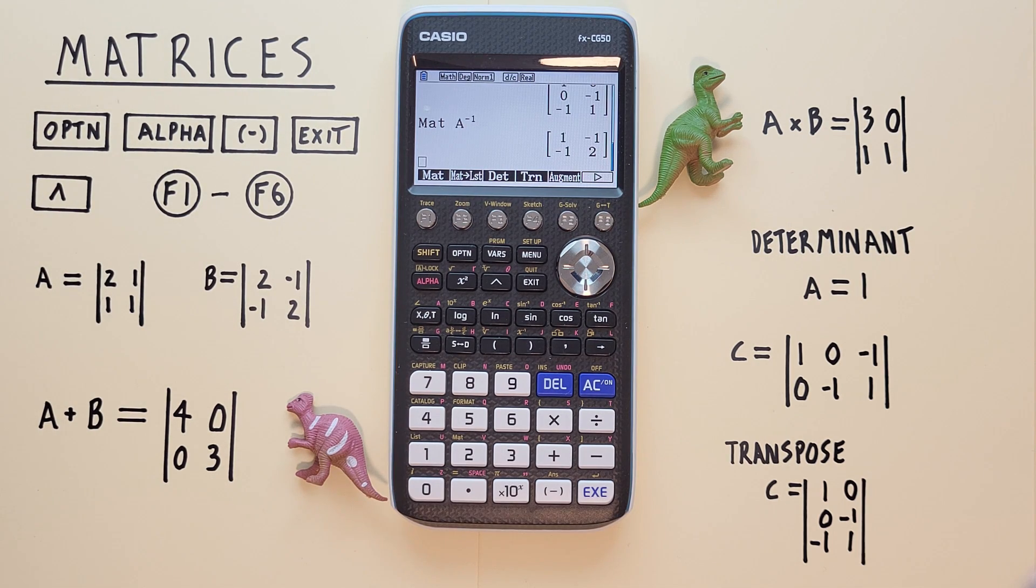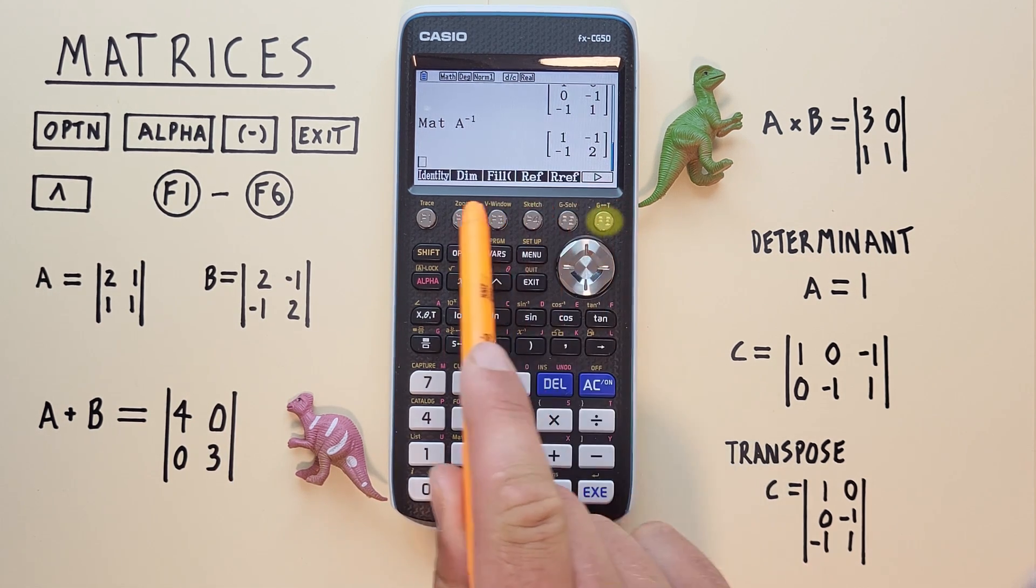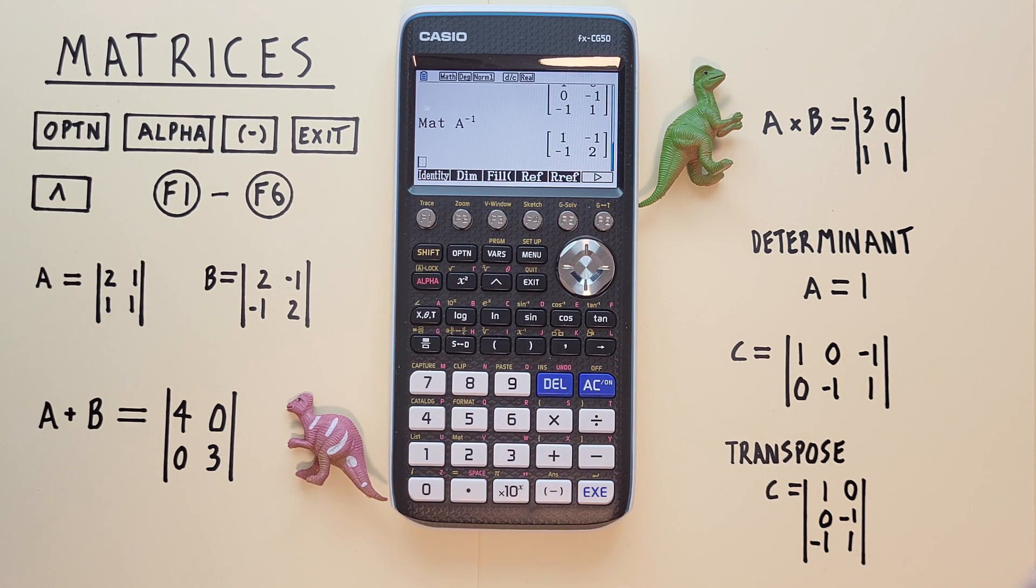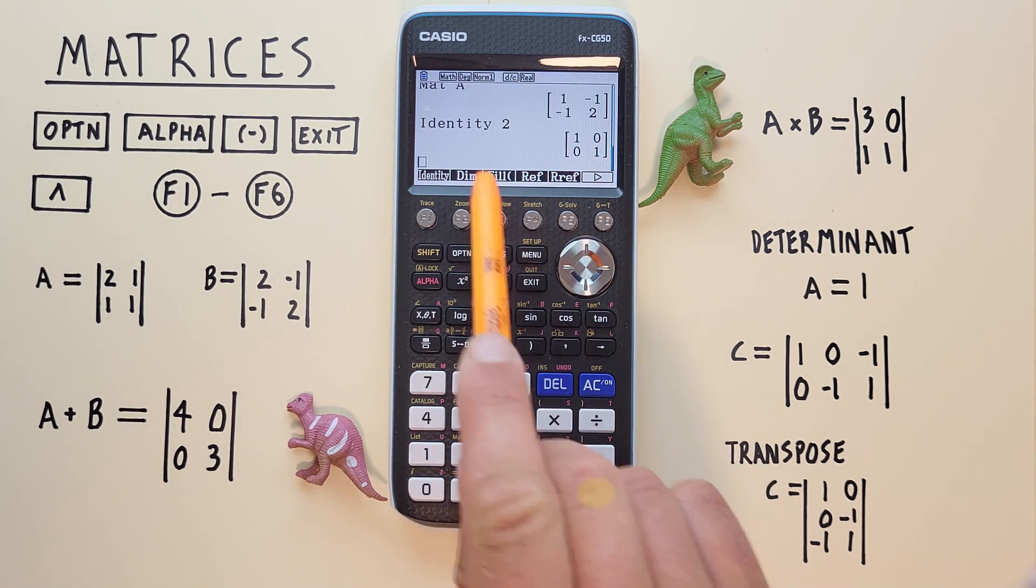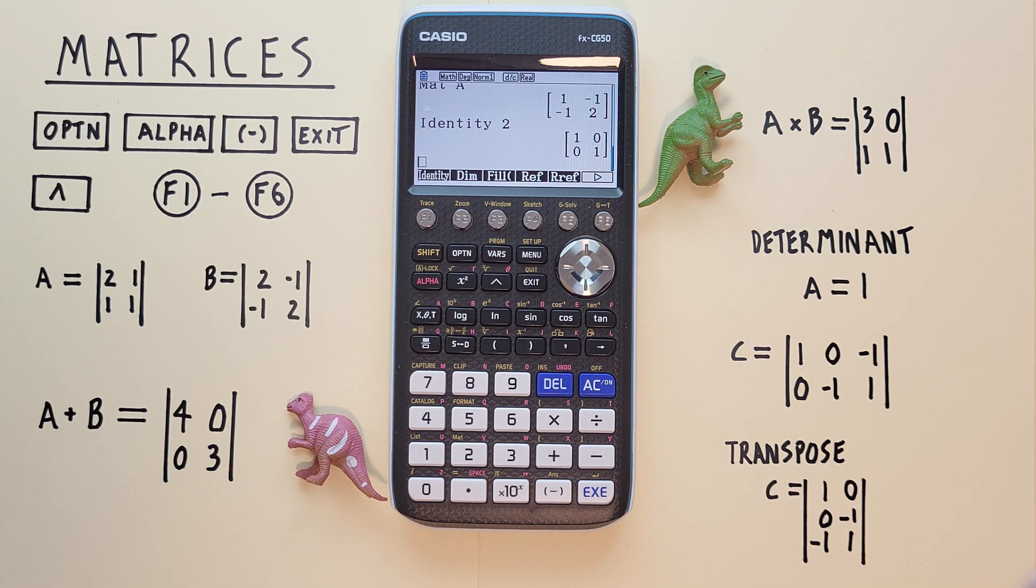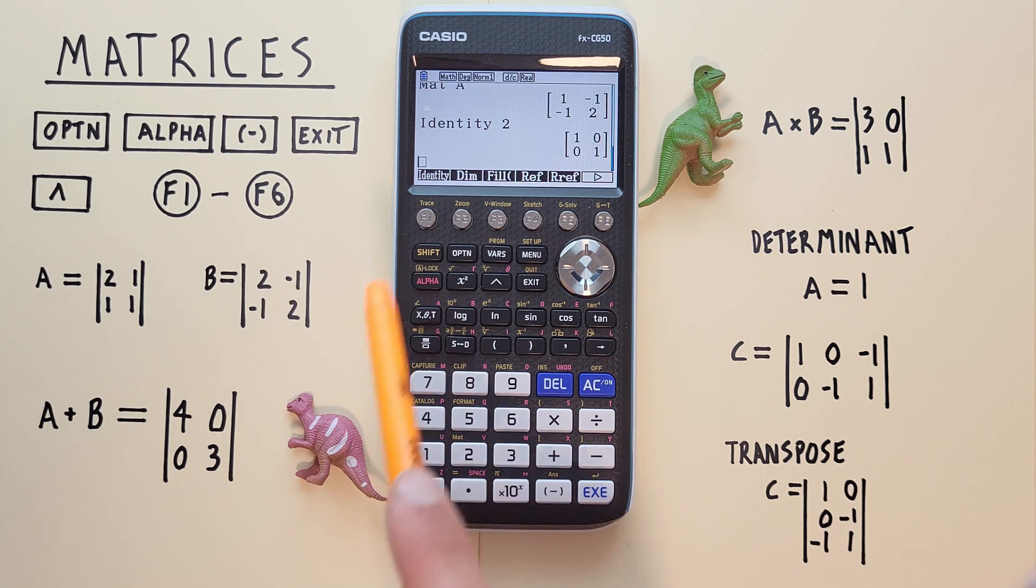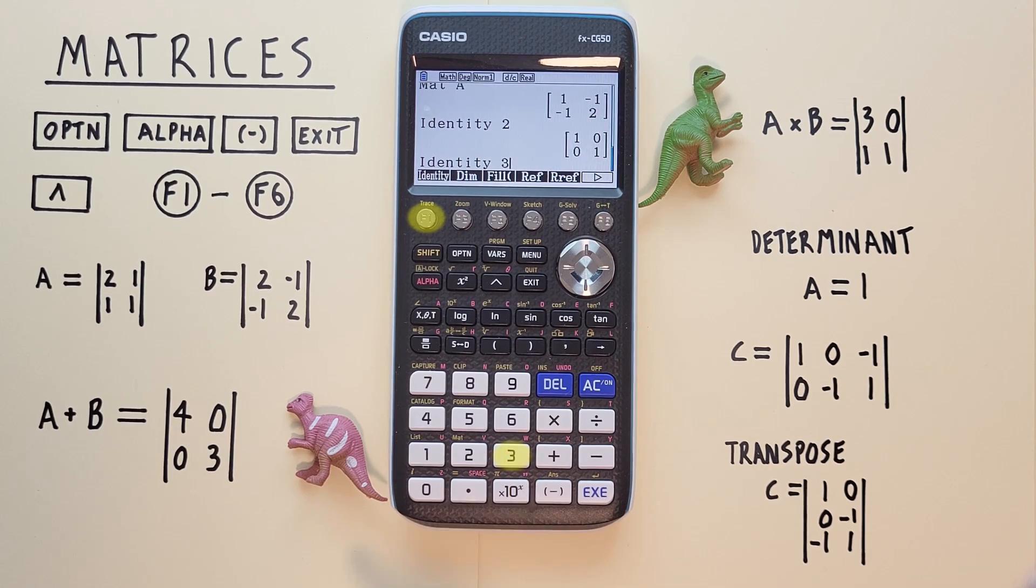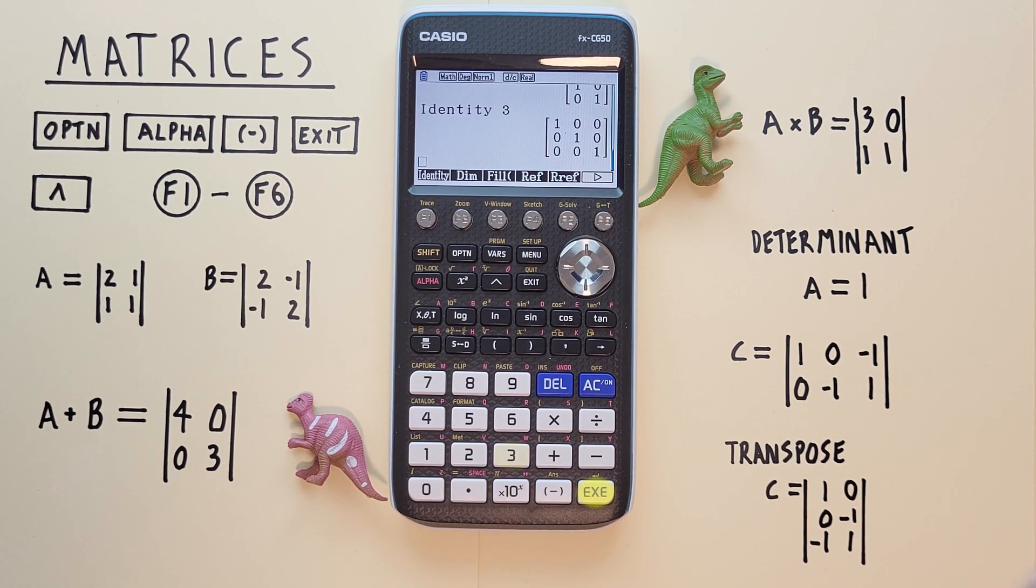What if we want to work with an identity matrix? Well to get an identity matrix, all we have to do is scroll over to this screen and hit identity. We'll tell it to find the identity matrix for a 2 by 2 matrix, so we just hit 2, EXE, and we see it gives us the identity of a 2 by 2 matrix. If we want the identity of a 3 by 3 matrix, again all we do is hit identity, 3, EXE, and there we go.